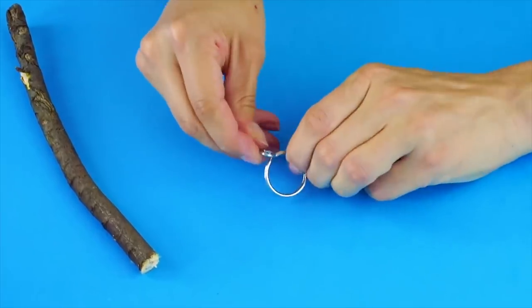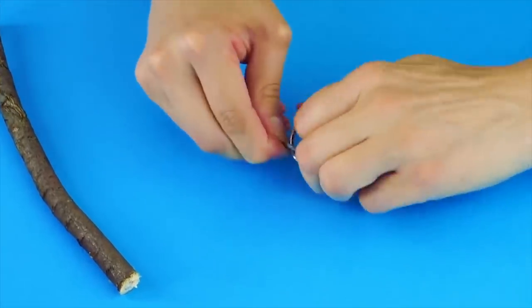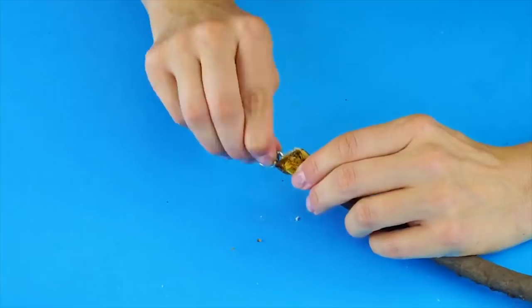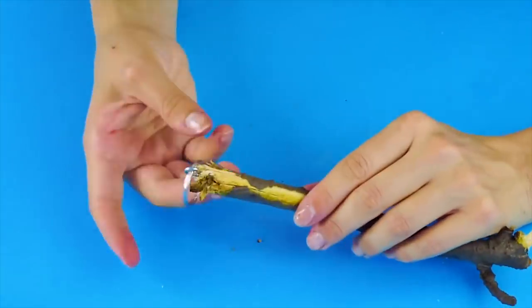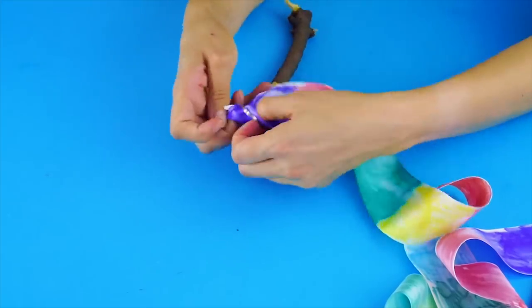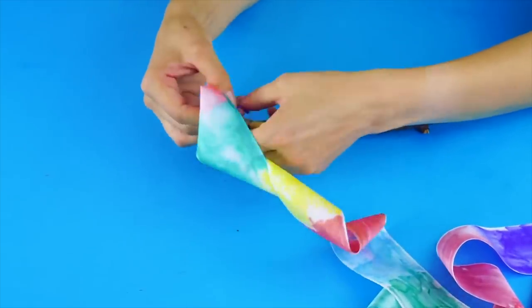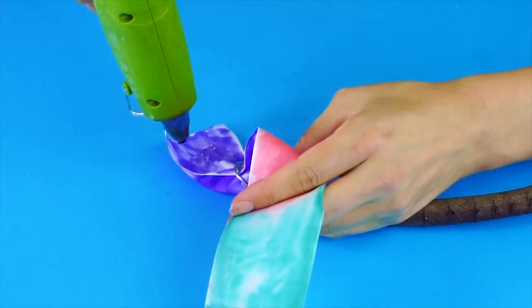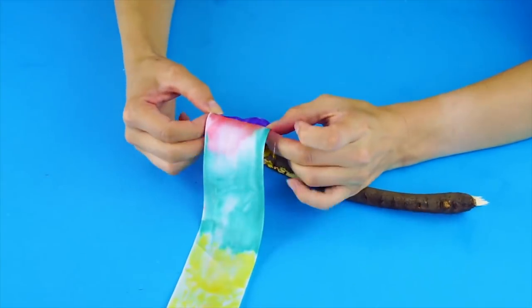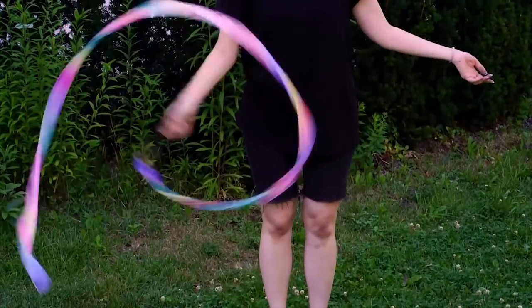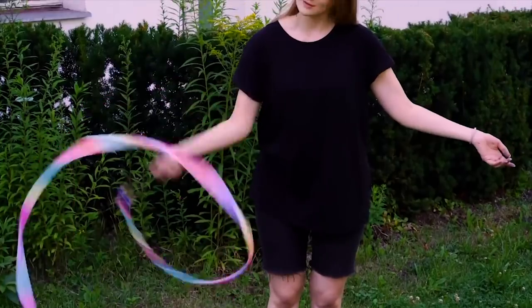Pull one end of your ribbon through the key ring, and use hot glue on the ribbon to secure it into a loop like this. Once the glue sets, it's time to break out your ribbon routine dance moves.